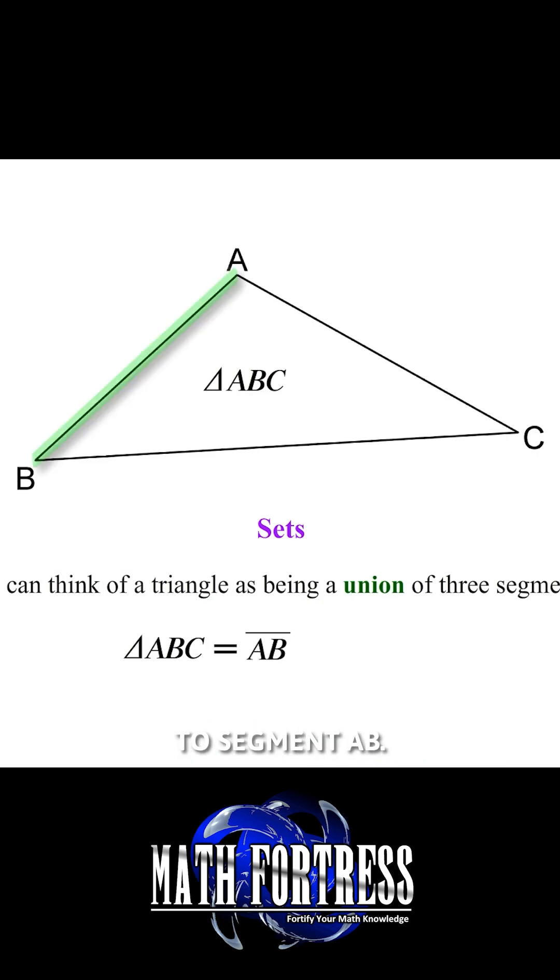Triangle ABC is equal to segment AB union with segment BC union with segment AC.